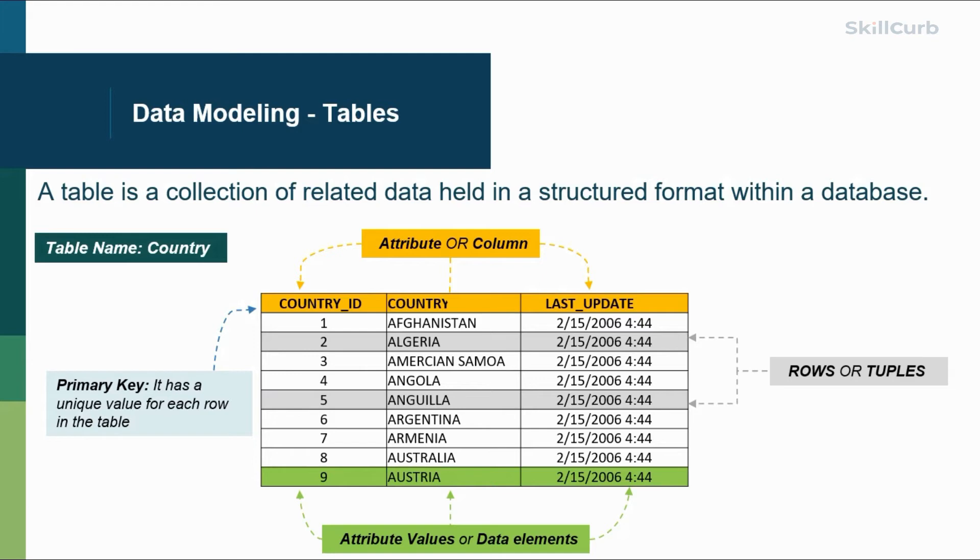created in green, those are actual values or data elements. Data elements are, if you look at the last row, country ID 9 - so 9, Austria - each of these individually are data elements. If someone says how many columns do you see in this slide, I would say 3: country ID, country, and last update.